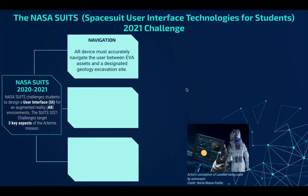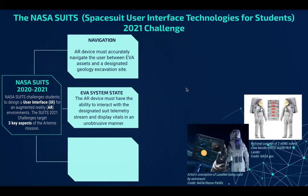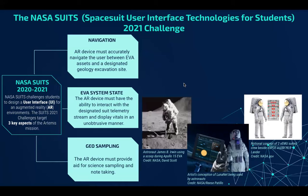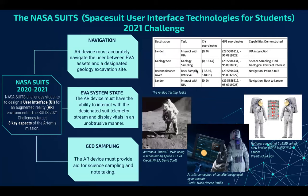For the EVA system state, the device must have the ability to interact with the designated suit telemetry stream and display vitals. And finally, for geology sampling, the device must have the ability to help the user with science sampling and note-taking. In this table on the right-hand side, lists of tasks for analog testing are shown.